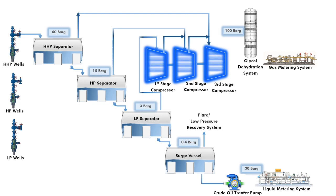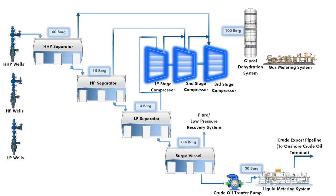The liquid of the surge vessel will flow to the crude oil transfer pump. The purpose is to boost the liquid pressure. Finally, the crude will be exported to the onshore crude oil terminal via the crude export pipeline. The gas from the third stage compressor will flow into the gas dehydration system.